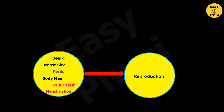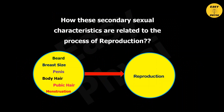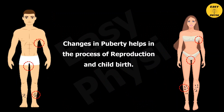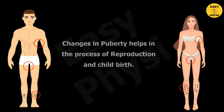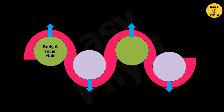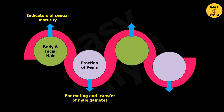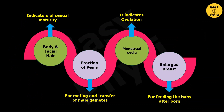How are these secondary sexual characteristics related to the process of reproduction? Changes in puberty help in the process of reproduction and childbirth. For example: body and facial hair indicates sexual maturity; erection of the penis is for mating and transfer of male gametes; the menstrual cycle indicates ovulation; and enlarged breasts are for feeding the baby after birth.